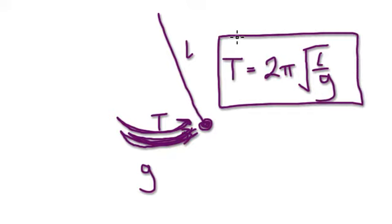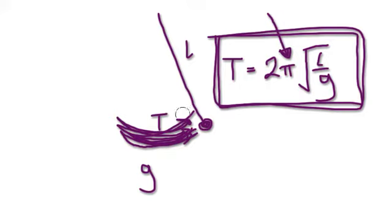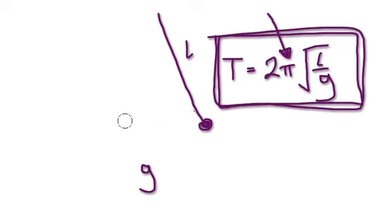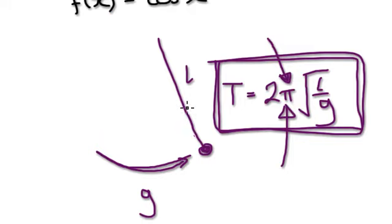I've done lots of videos on this, so if you don't understand it, watch some of the earlier videos. The formula for the time it takes to make one swing is given by this. Now, there's a pi here — where there's pi, there's a circle. Given a pendulum swinging back and forth like this, where is the circle?